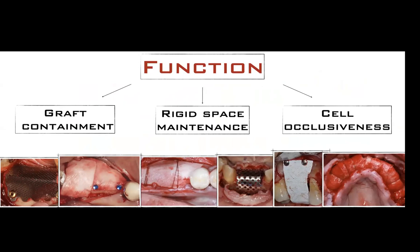We're talking mostly about GBR, so let's discuss membranes. The three functions of a barrier are: graft containment — keeping the graft in its spot. In a socket, you don't really need containment because the defect itself contains it. Rigid space maintenance — some barriers like mesh or titanium-reinforced membranes are rigid and won't collapse under soft tissue pressure. And cell occlusiveness — especially with bone substitutes, you need a membrane that prevents soft tissue cells from crossing.